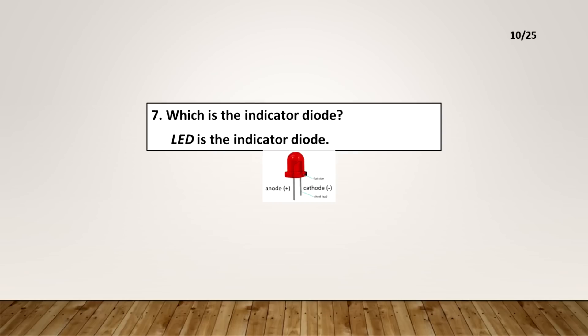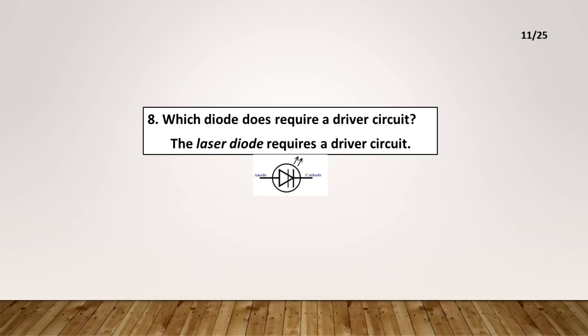What is the indicator diode? LED is the indicator diode. Which diode does require a driver circuit? The laser diode requires a driver circuit.